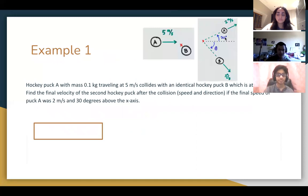Our first practice problem is collision in two dimensions. A hockey puck A with mass 0.1 kilograms traveling at 5 meters per second collides with an identical hockey puck B which is at rest. Find the final velocity of the second hockey puck after the collision. This means speed and direction.